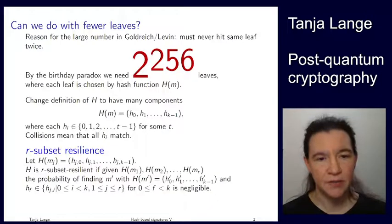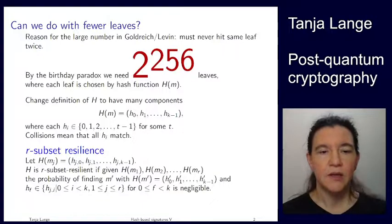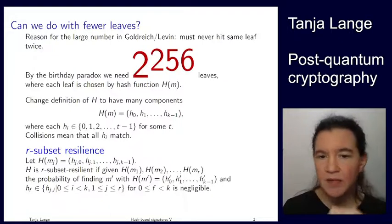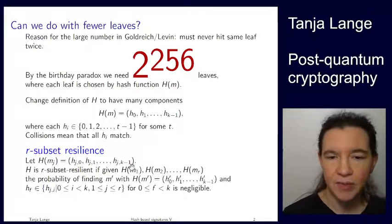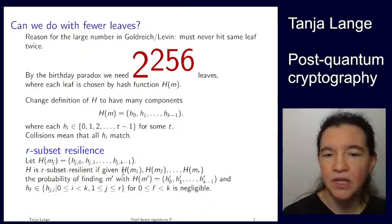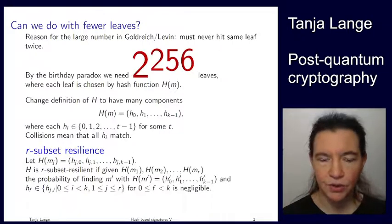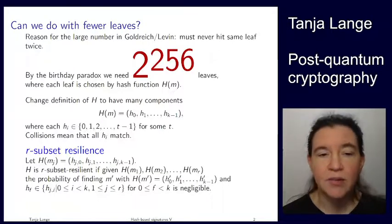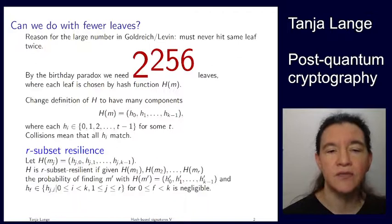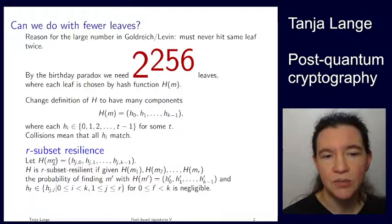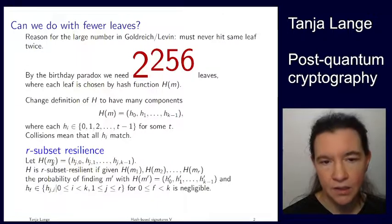So the likelihood of collisions is the same. But now, with this new definition of h, we can introduce a term which is called r-subset resilience. So what is r-subset resilience? Let's start with having r different messages. So we're having m1, m2, m3 till mr. So this is what the messages come in, and then let's assume we're having for each of those the output of the hash function.